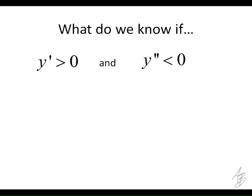If the first derivative is positive the function is increasing, but if the second derivative is negative that means the function is concave down on that interval, and so we're going to have a function that might look like that on a particular interval.